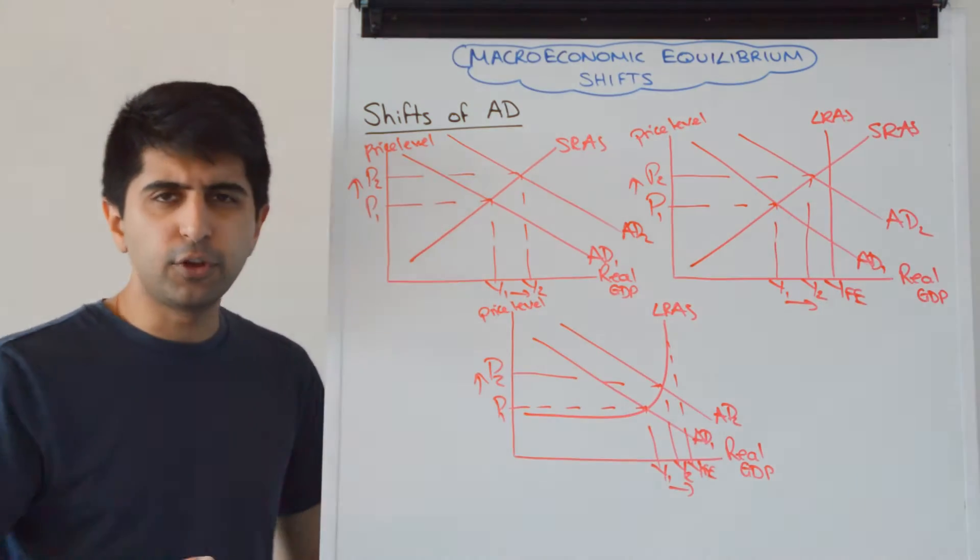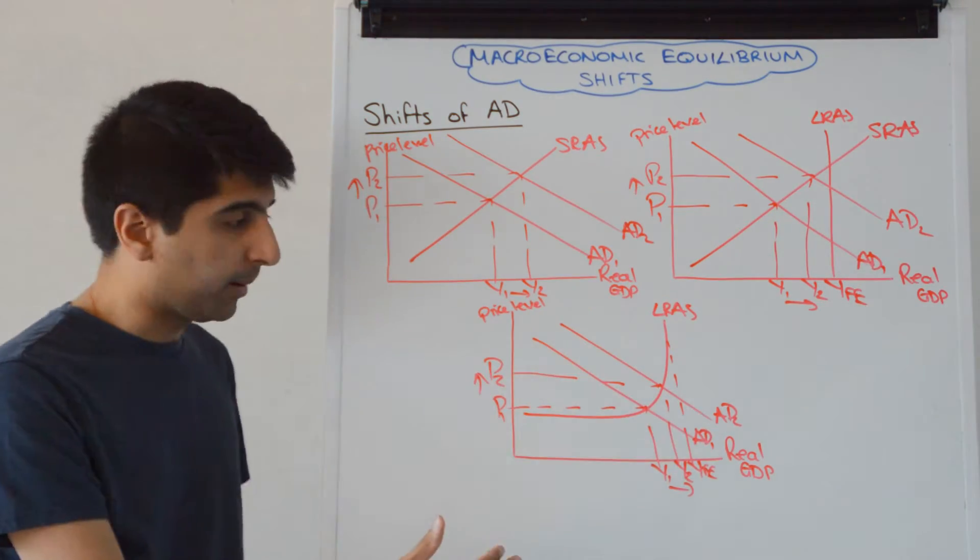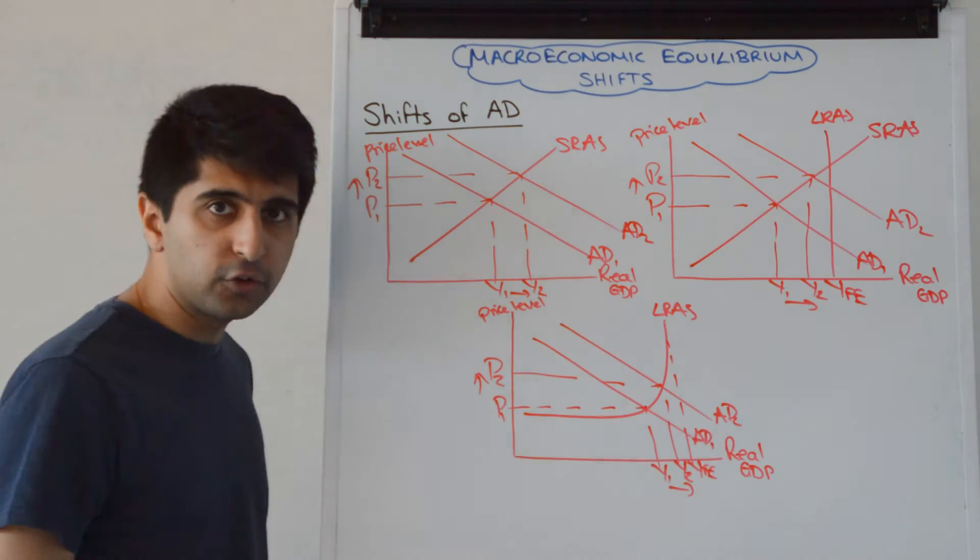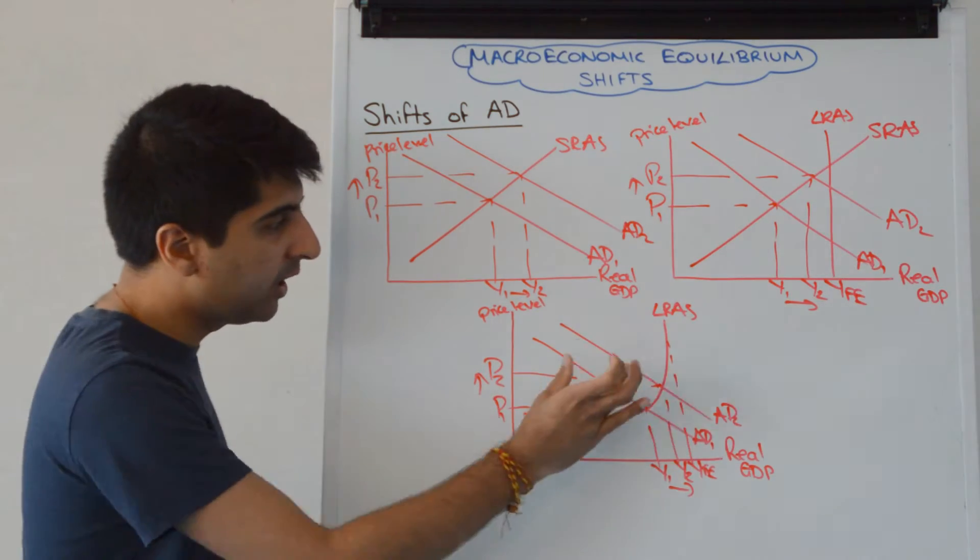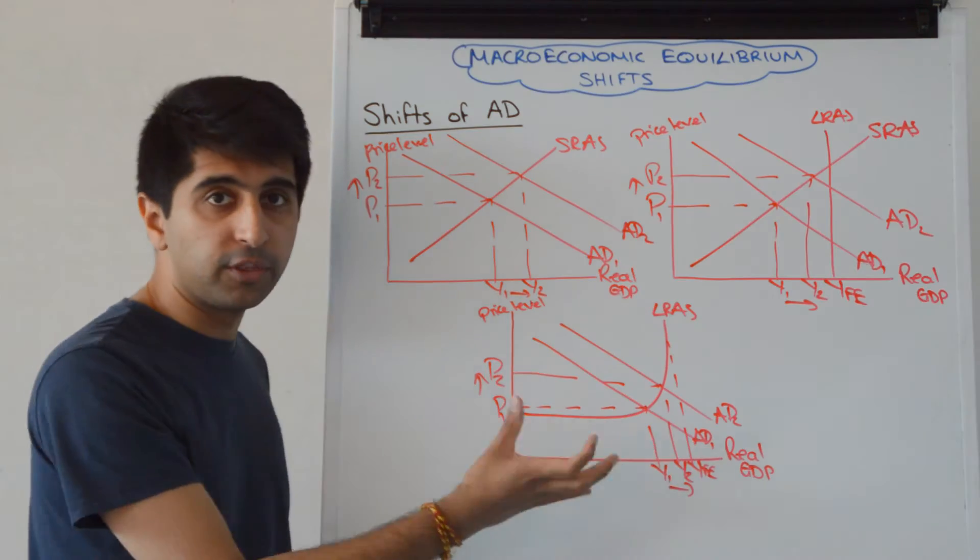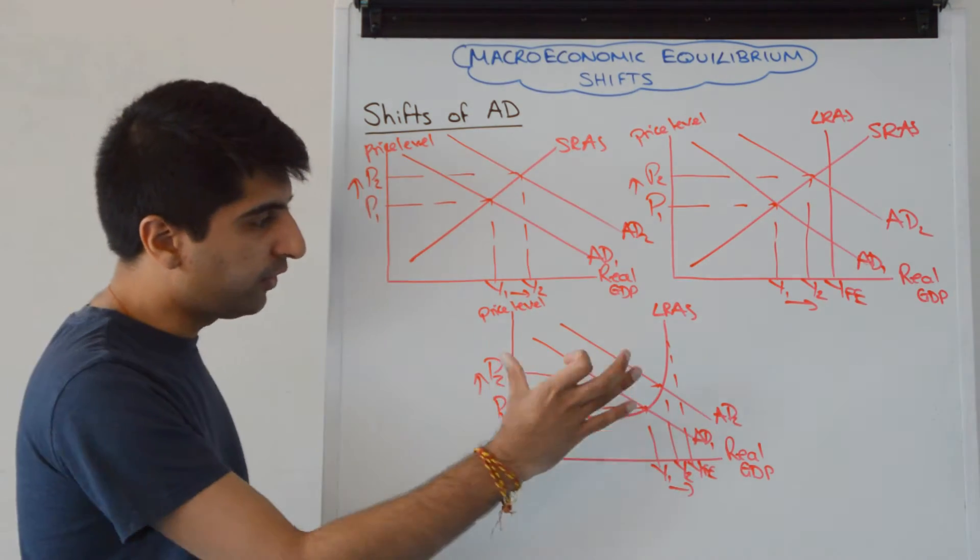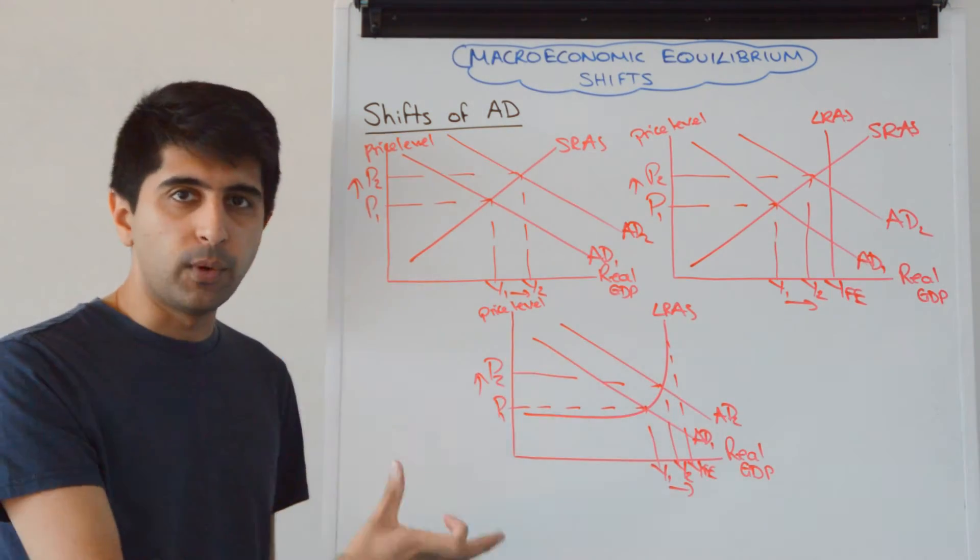The beauty of using Keynes is you've got lots of evaluation on one diagram. So if AD was on the horizontal part, there wouldn't be the inflationary pressure. If AD was on the vertical part, there wouldn't be the increase in growth, there would just be inflationary pressure. So this one is very powerful for evaluation.